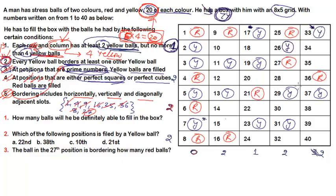So row 2 is done with yellow ball at 26; all other positions in that row get red balls. We now have 6 yellow balls and 6 slots remaining to fill. For row 3, there's no need to add more yellow balls (minimum already met), so slot 35 gets a red ball.